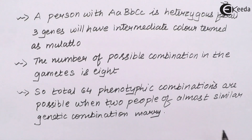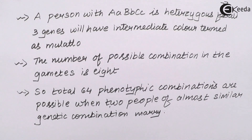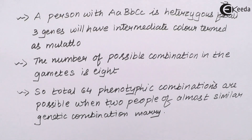If two people who are on the fairer side but have slight differences in genetic makeup end up marrying each other, there could be 64 different combinations of skin colour obtained in the long run.